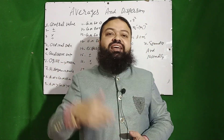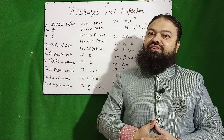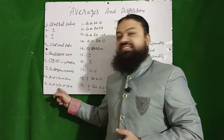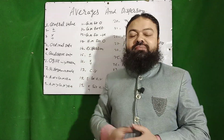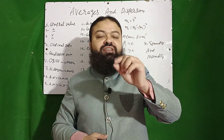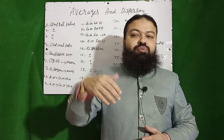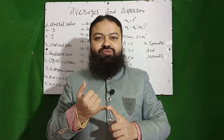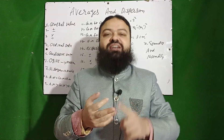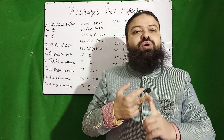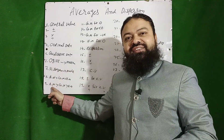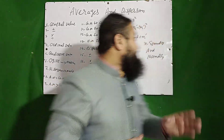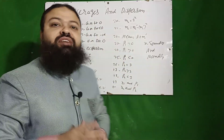In the MCQs, written test, or interview: when is arithmetic mean greater than geometric mean, which is greater than harmonic mean? Whenever we have positive distinct values and calculate arithmetic mean, geometric mean, and harmonic mean by their respective formulas, arithmetic mean will always be greater than geometric mean, which will always be greater than harmonic mean.